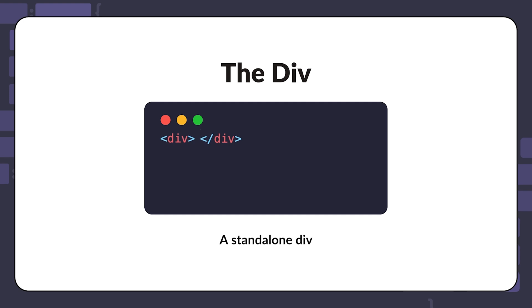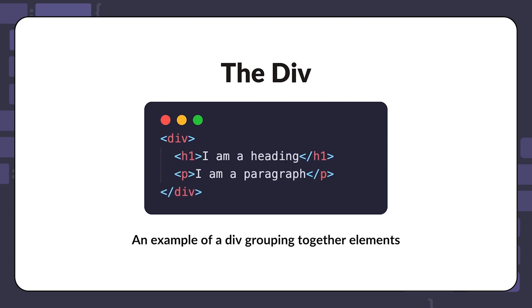We can also use it in a very basic form without styling to hold other elements together. So for example, we can create a div and put a heading in it, and put a paragraph in it, and now these two elements will be grouped together.